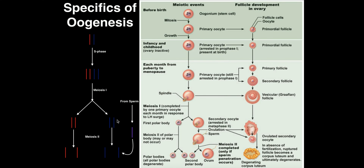You're going to have ovulation of the secondary oocyte. What's really important to understand is that the secondary oocyte is going to progress through prophase two and get up to metaphase two — and then it gets arrested again, this time in metaphase two. All those maternal chromosomes are lined up at the metaphase plate, and the cell just halts there, awaiting the potential of a sperm penetrating the egg.